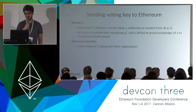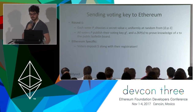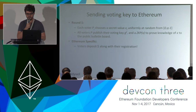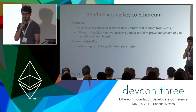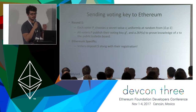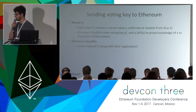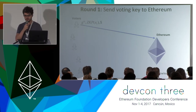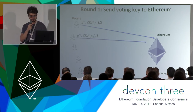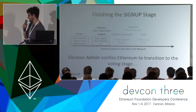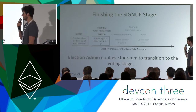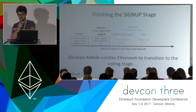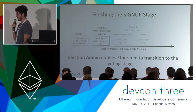The voter creates an Ethereum transaction including the voting key, a proof that they own this voting key, and a very small deposit. Ethereum verifies the proof, stores the deposit, and stores the encrypted vote. Once enough voters have done this, the election administrator pokes Ethereum to move on to the voting stage. During this transition from sign-up to voting stage, Ethereum computes a second key for every single voter — we call this the reconstructed key, and this is where all the magic happens in terms of the cryptography.